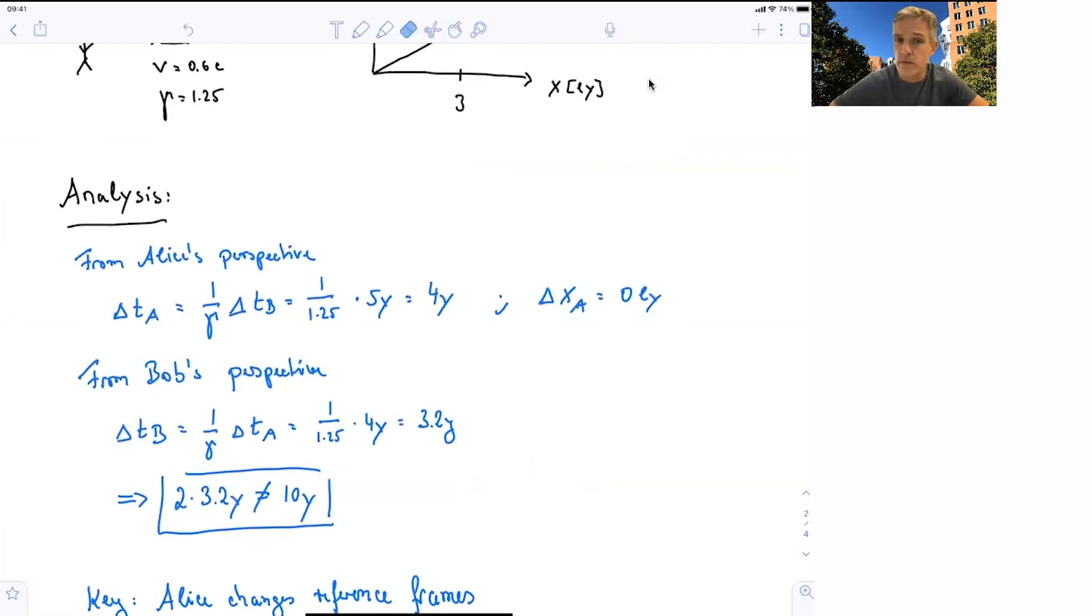And so we find that there's already a conflict. If we add the times together, both ways, the inbound and the outbound ways, 6.4 years is not equal to 10 years. So that's already a contradictory statement in this story.